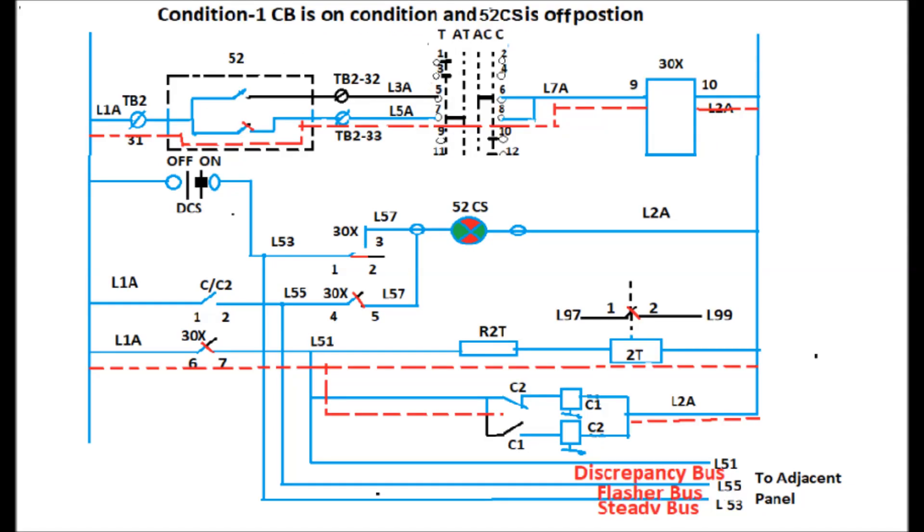Similarly, after the closing of CB, if we move the switch position to its latch off position without pressing the switch, the discrepancy will occur between the state of CB and switch position of CB. Thereby it will lead to energize the discrepancy and flasher bus and lead to flashing of the lamp in the control switch as shown in this figure.